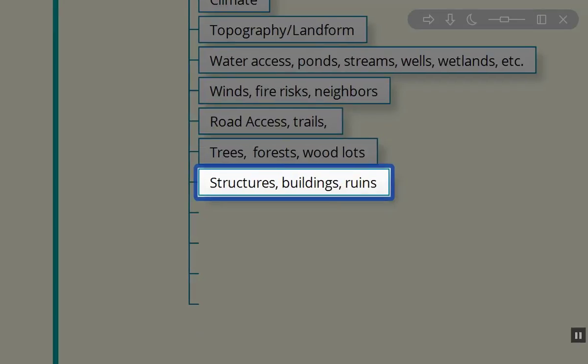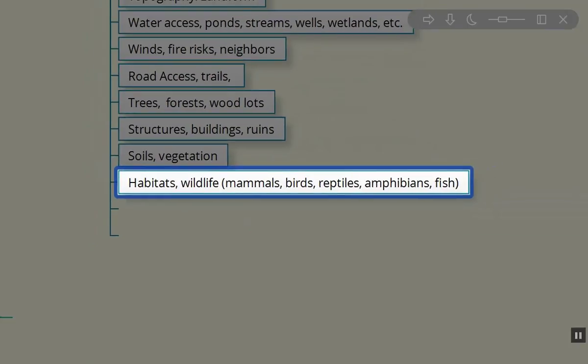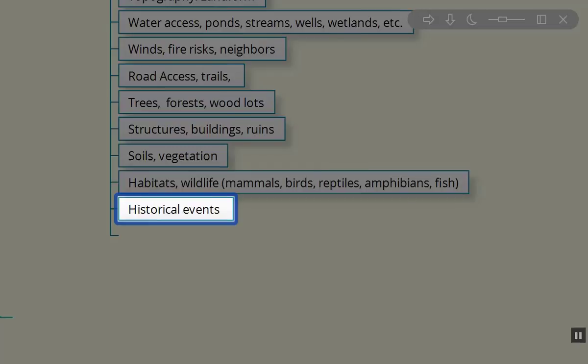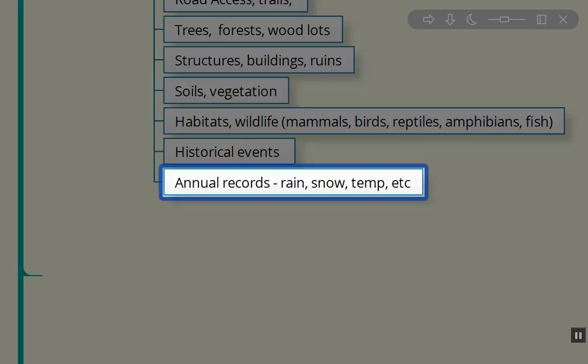The structures, the buildings, the ruins, the soil, the vegetation that's existing on the site, the habitat, the wildlife, the mammals, the birds, the reptiles, amphibians, the fish, the microbes, everything that's there. We want to gather as much information as possible. We want to go to the town's historical records and see what is there, what's happened there in the past. We want to take into account the annual and monthly rainfall, precipitation, temperatures, extremes, the hundred year events. All of those things are part of the observation and interaction.